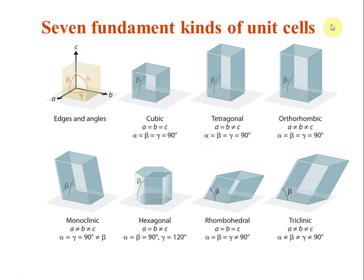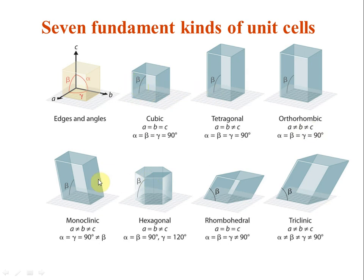There are seven fundamental kinds of unit cell in the universe — all unit cells fit into one of these. Start with a proper cube: all lengths equal, all angles 90 degrees. If you pull it up so that length and breadth are equal but not equal to height, it becomes tetragonal. Pull one more side and length, breadth, and height are all different but angles are still 90 degrees — that is orthorhombic. Applying a shear force gives further variations.